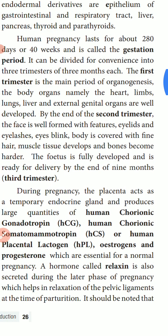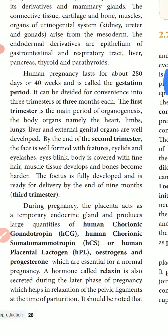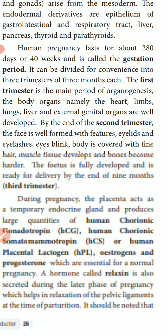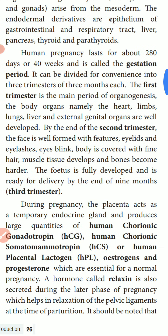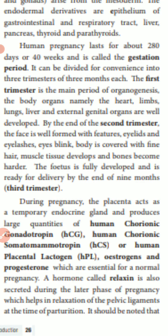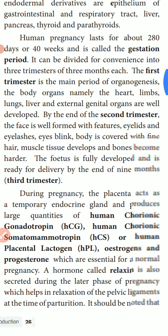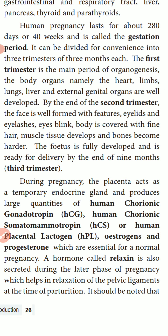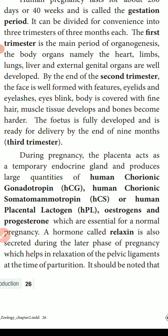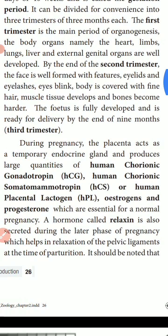Human pregnancy lasts about 280 days or 40 weeks, called the gestation period. It is divided into 3 trimesters of 3 months each. The first trimester is the main period of organogenesis — organs such as the heart, limbs, lungs, liver, and external genital organs are formed and well developed.